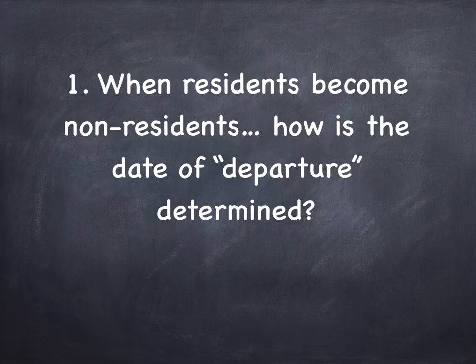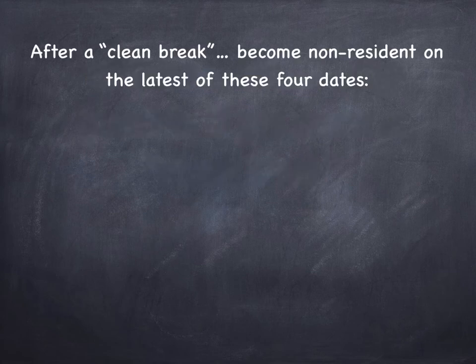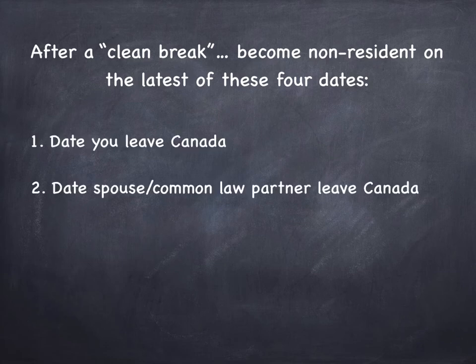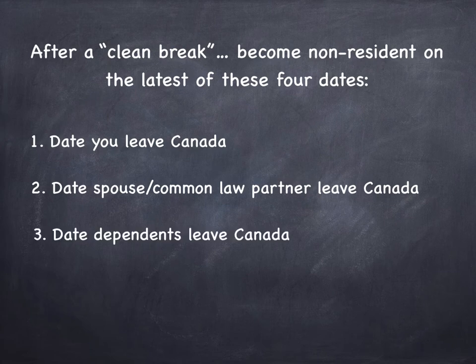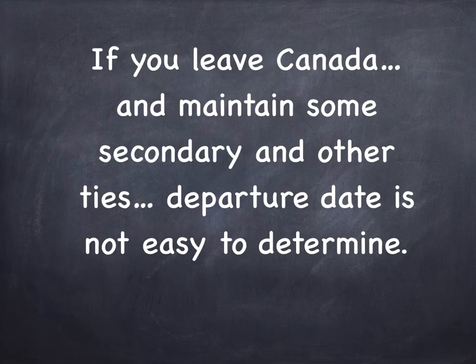When residents become non-residents, how is the date of departure actually determined? It's only possible to answer this definitively if you've made a clean break from Canada. For more information on what a clean break is, refer to the tax and residency video. After a clean break, you become a non-resident on the latest of these four dates: the date you leave Canada, the date your spouse or common-law partner leaves Canada, the date your dependents leave Canada, or the date you become a resident in the country that you settle in. If you leave Canada and maintain some secondary and other ties, the departure date is not going to be that easy to determine.